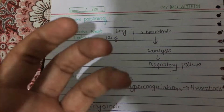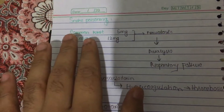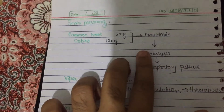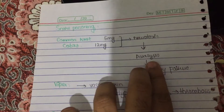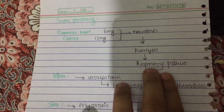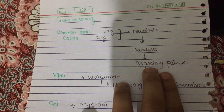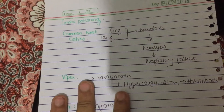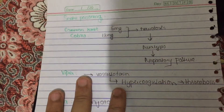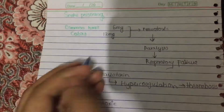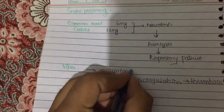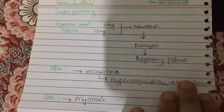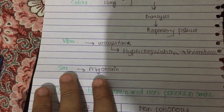The concentration needed to have a neurotoxic effect is 6 mg and 12 mg. It causes local toxicity, then paralysis and respiratory failure. Then there is the viper, which is vasculotoxic — it causes hypercoagulation and thrombosis.